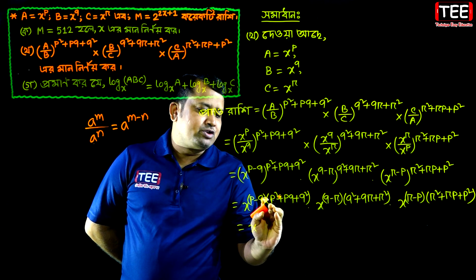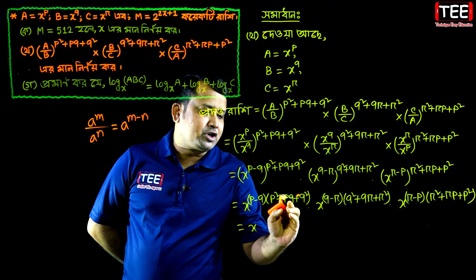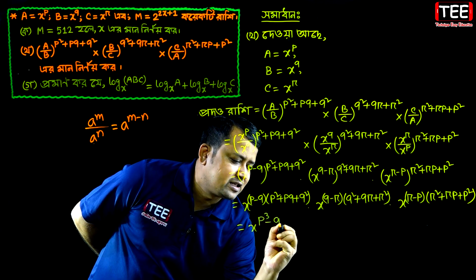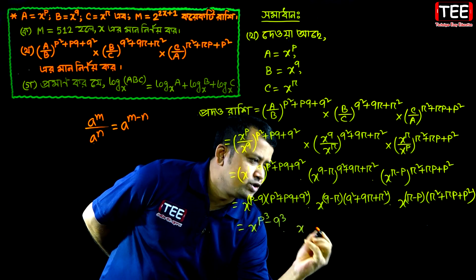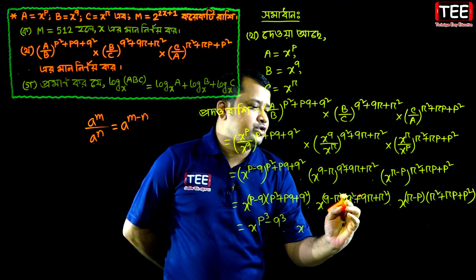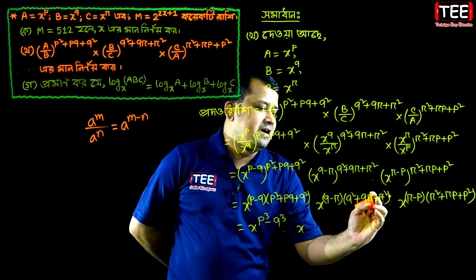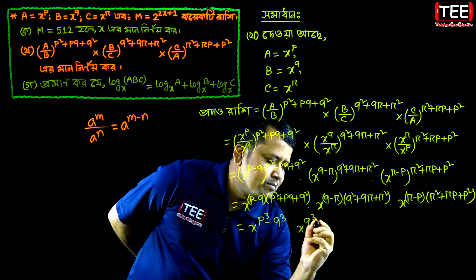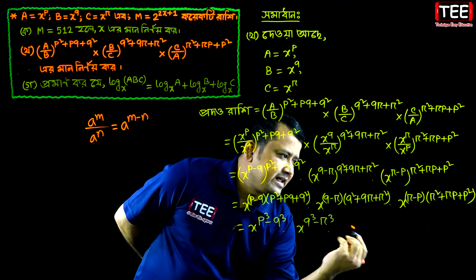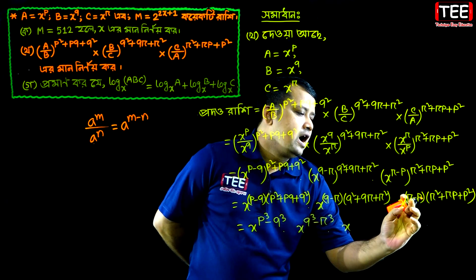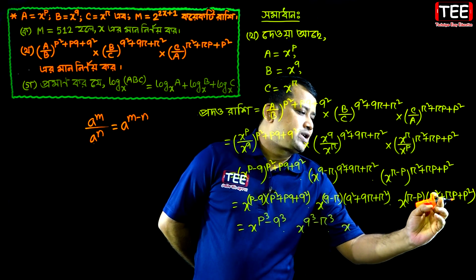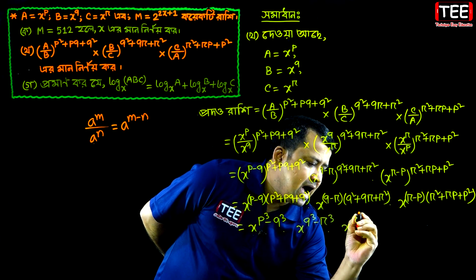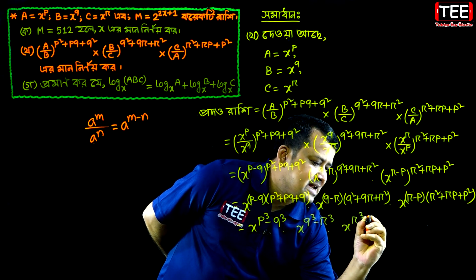P minus q into p squared plus p cubed plus q squared gives the formula: p cubed minus q cubed. X to the power q minus r into q squared plus qr plus r squared gives q cubed minus r cubed. And r minus p into r squared plus rp plus p squared gives r cubed minus p cubed.